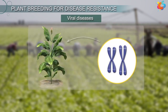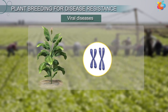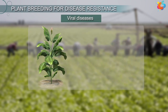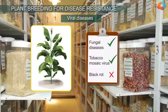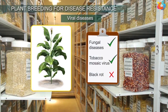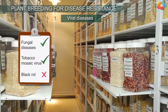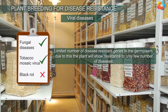Adding disease resistance by this method is subject to many limitations. In this method, we can add disease resistance only if the disease resistance allele is present in the germplasm. Generally, there will be only a limited number of disease-resistant genes in the germplasm. Due to this, the plant will show resistance to only a few diseases.